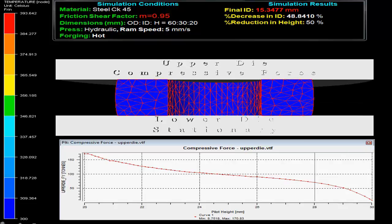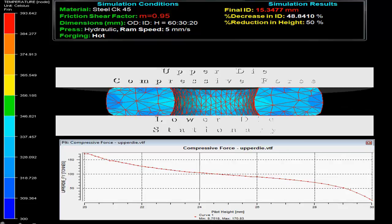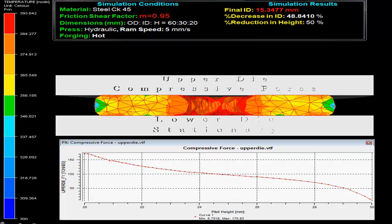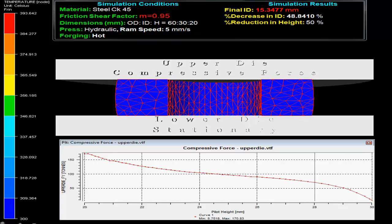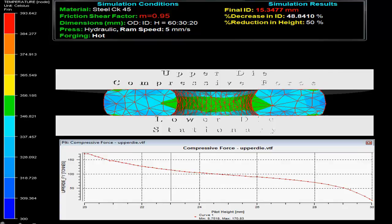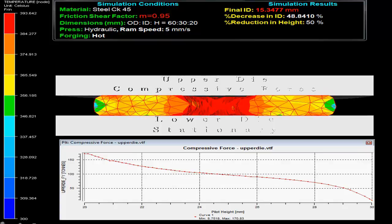At the bottom, a graph shows force on the upper die versus displacement. The temperature evolution during the process can be compared using the scale on the left side.